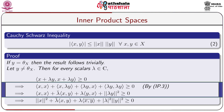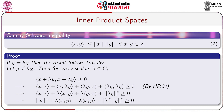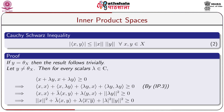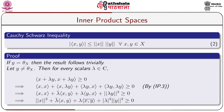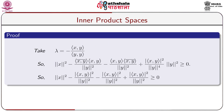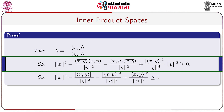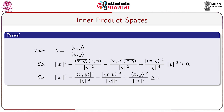This gives norm of x squared plus lambda-bar·⟨x, y⟩ plus lambda·⟨y, x⟩ plus norm of lambda·y squared, which is greater than or equal to 0. This implies norm of x squared plus lambda-bar·⟨x, y⟩ plus lambda·conjugate of ⟨x, y⟩ plus modulus of lambda squared times norm of y squared is greater than or equal to 0. Taking lambda equal to minus ⟨x, y⟩ divided by ⟨y, y⟩, since y is not theta so ⟨y, y⟩ is not zero, we get norm of x squared minus modulus of ⟨x, y⟩ squared divided by norm of y squared, which is greater than or equal to 0.